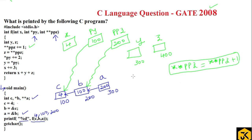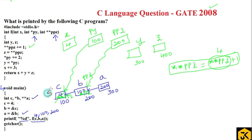The value of ppz is 200. Applying one star, we go inside b and get 100. Applying one more star, we enter the house of c and get the value 4. So 4 + 1 = 5, and that result is stored back into the same memory location via `**ppz`, replacing the value of c with 5.